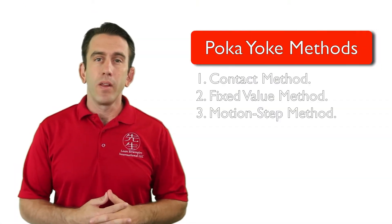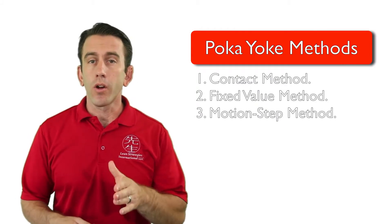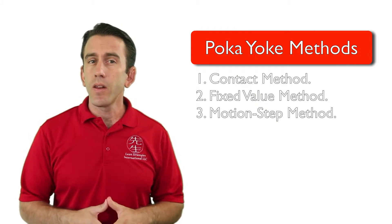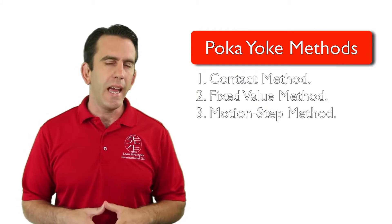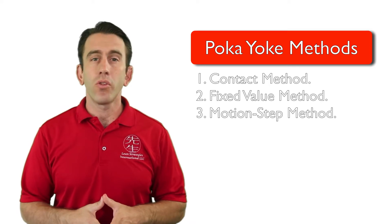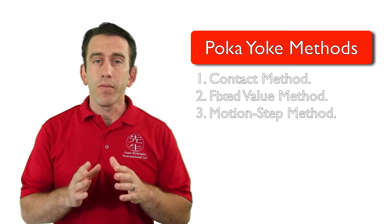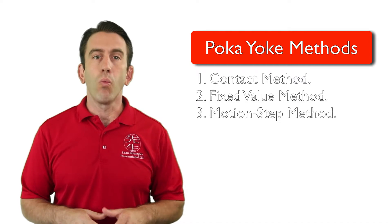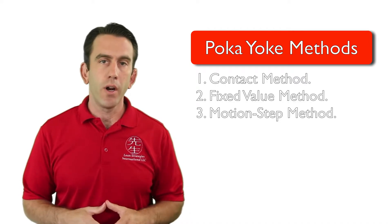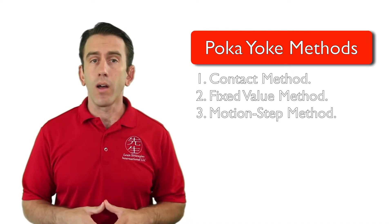The three most well-known methods used in poka-yoke are the contact method, fixed value method, and the motion step or sequence method. Each of these three methods can be used to warn an operator or to control a process.